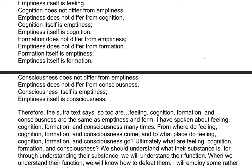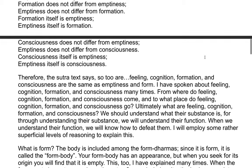From where do feeling, cognition, formation, and consciousness come? And to what place do they go? Ultimately, what are feeling, cognition, formation, and consciousness? We should understand what their substance is, for through understanding their substance we will understand their function. When we understand their function, we will know how to defeat them. We will employ some rather superficial levels of reasoning to explain this.